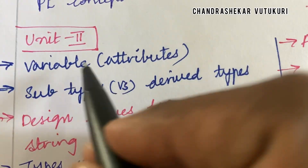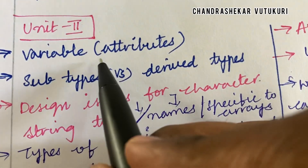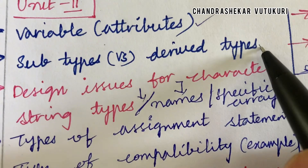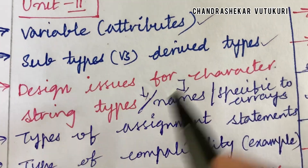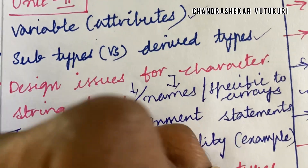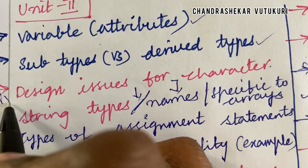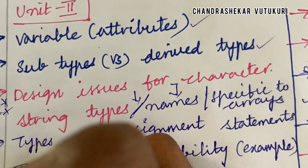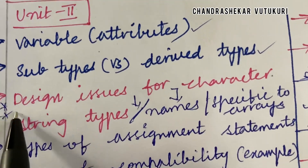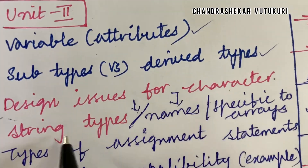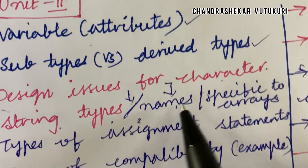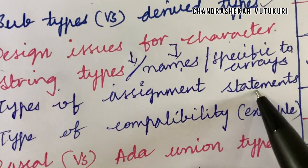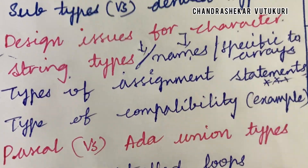Define the term variable and its attributes, and subtypes versus derived types and their differences. Design issues for character string types is said to be a topmost question from Unit 2, either 4A or 4B. The design issues related to character string types, names, or specific to arrays, and so on.